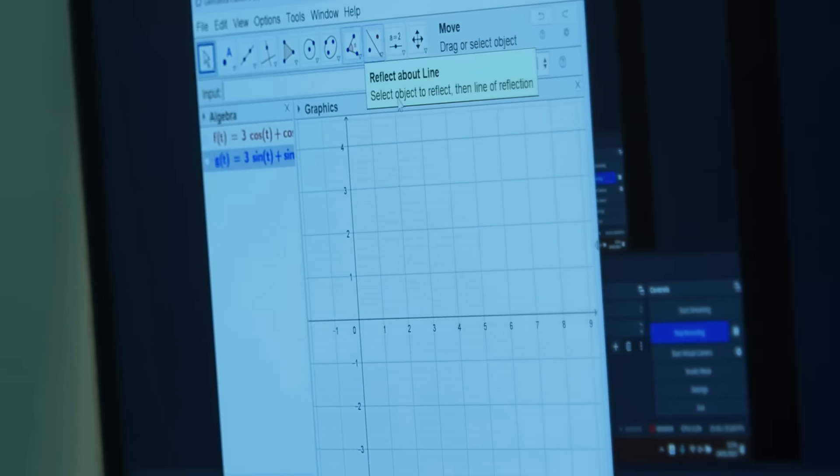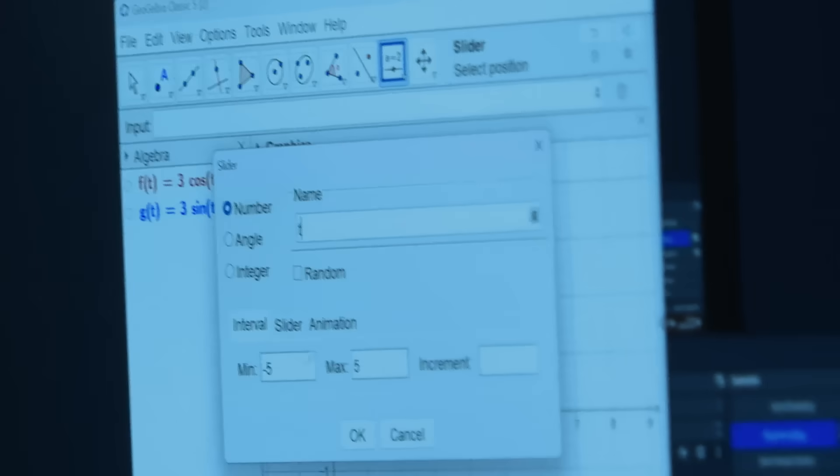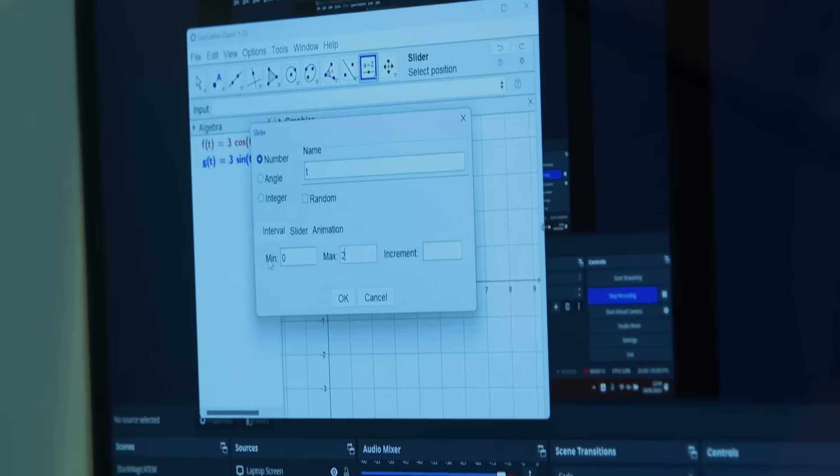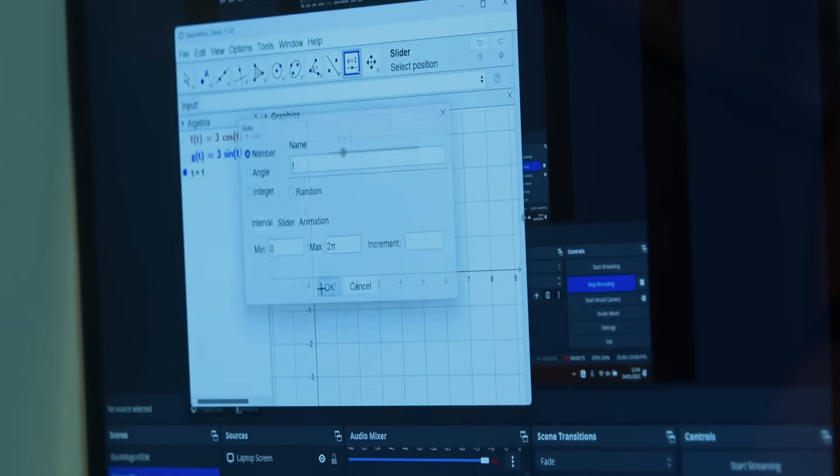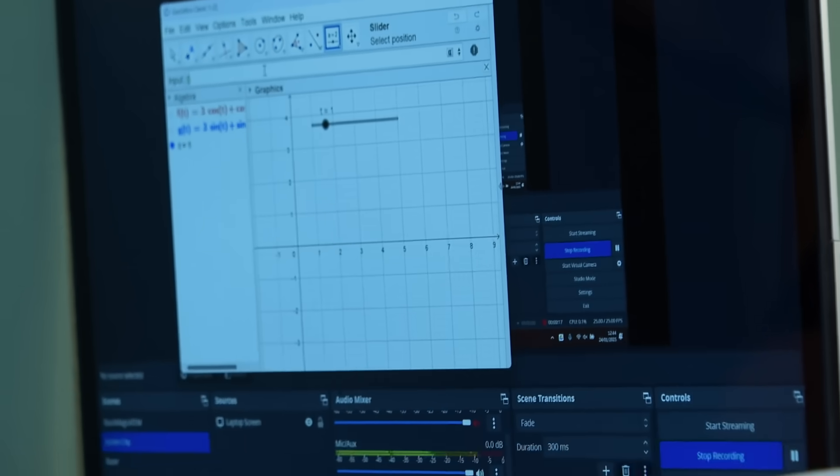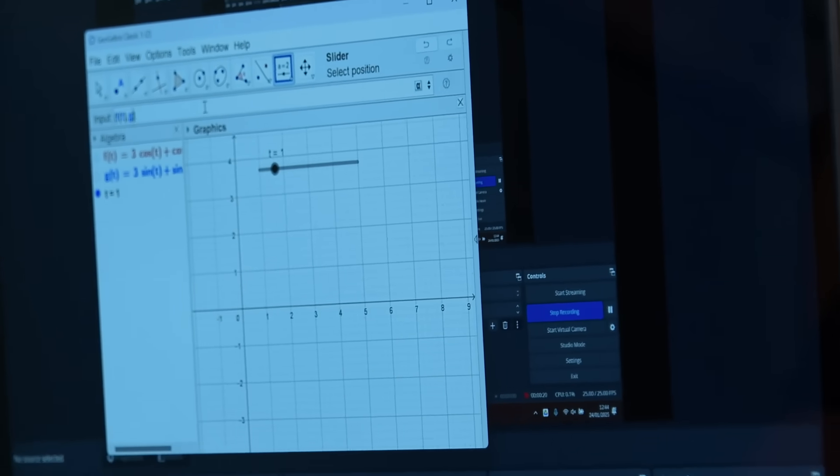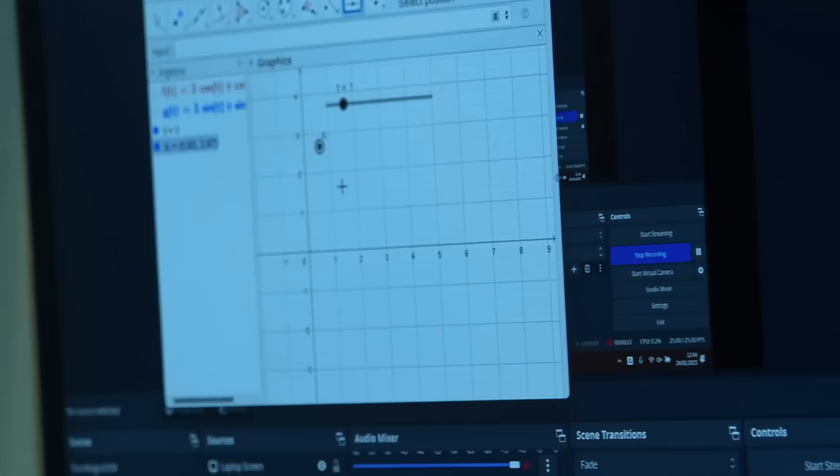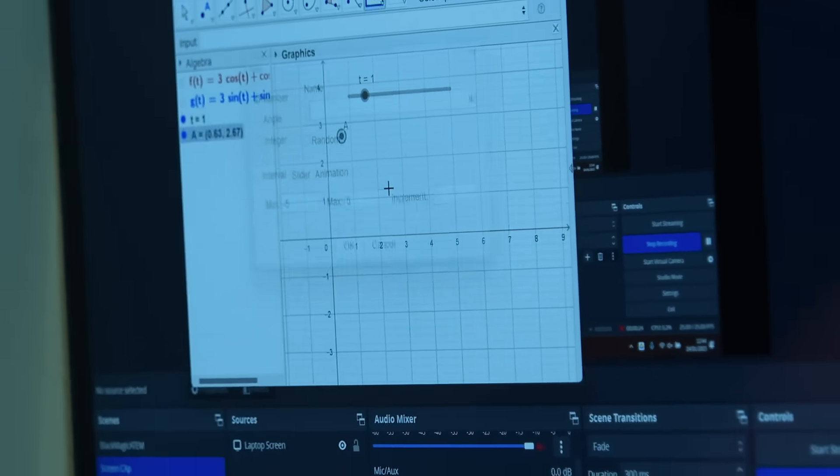I want to plot them over time. So let's make a slider t which goes between 0 and 2 pi, and that's the parameter I was talking about. Let's make a point which is f of t and g of t. And there's that point. I'm just checking that this is the shape we were after. Can you see it moving around in a certain way? Let's trace it.